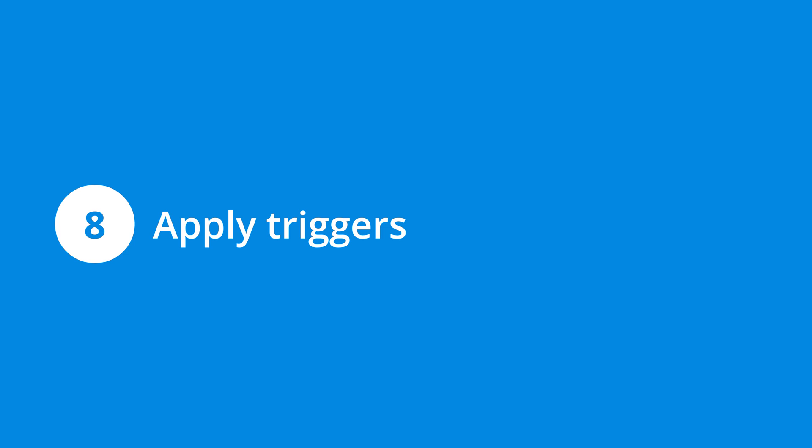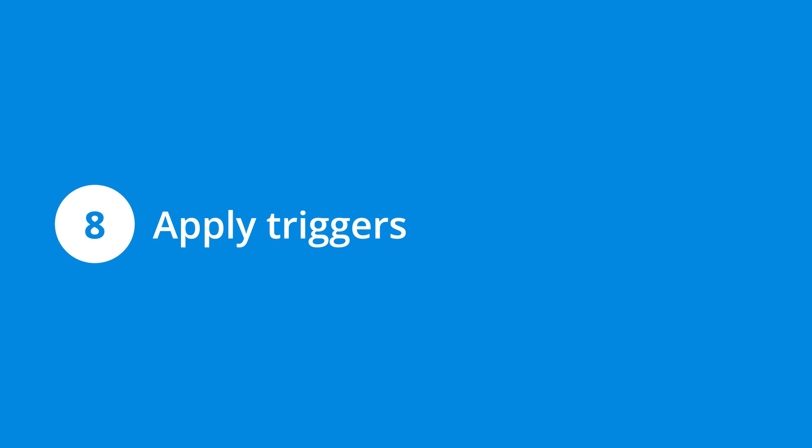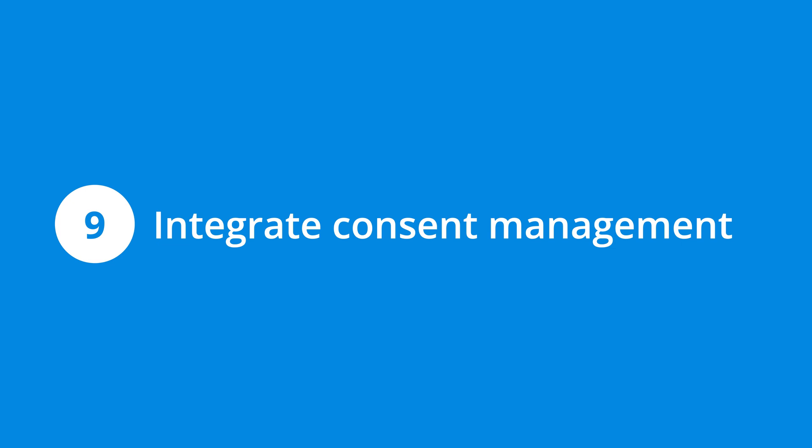If you'd like to learn more about the different types of triggers you can create, check out the extra resources in the description below this video — I've included a link to my Google Tag Manager glossary. Step 9 is to integrate your consent management platform — your cookie banner — with your tags. The way you do this will depend on how you're adding the cookie banner to your website and the tags you're using in your container. Once integrated, most of Google's tags can be configured to automatically adjust their behavior based on people's consent preferences, while other tags might need to be blocked if consent isn't granted. Step 10 is to test all of your tags using the preview mode. We covered Tag Assistant and the preview mode in the previous lesson.